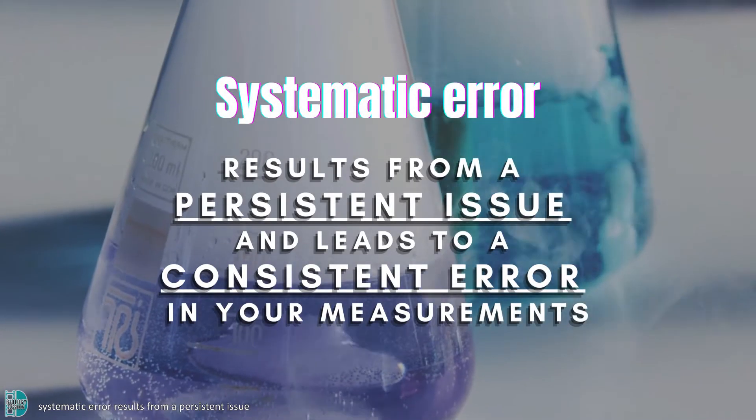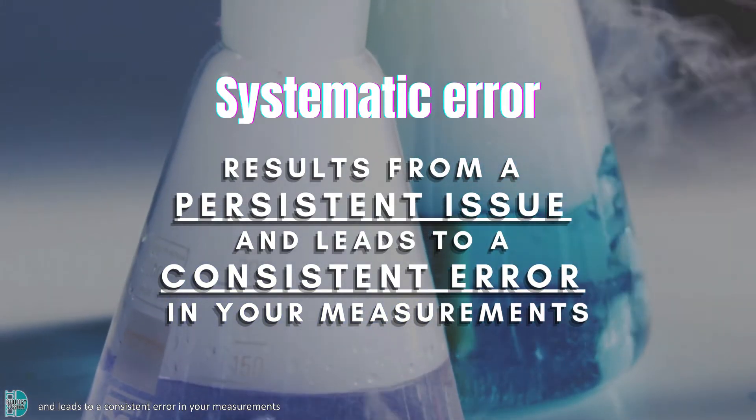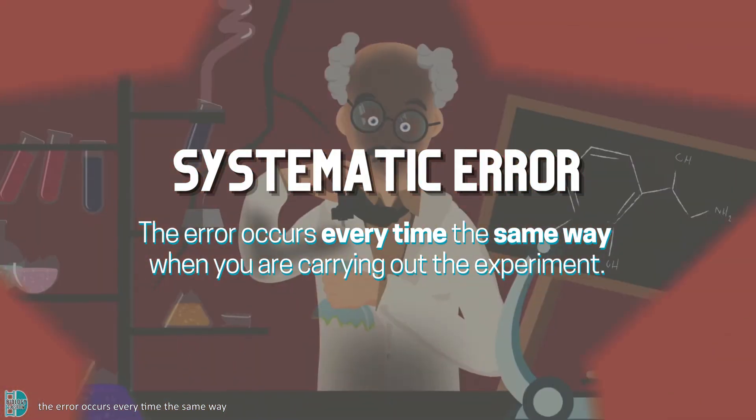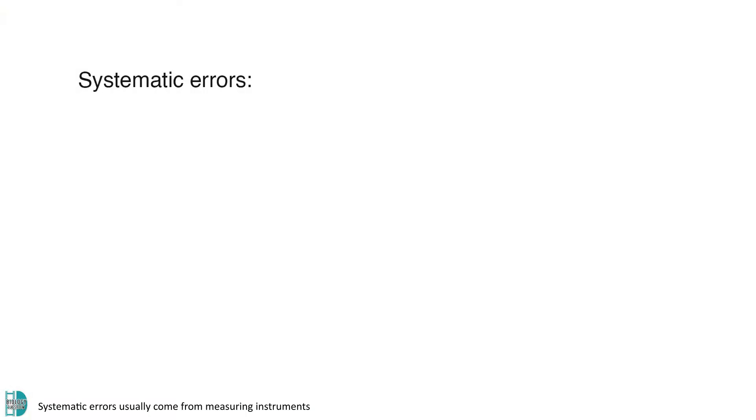Systematic error results from a persistent issue and leads to a consistent error in your measurements. This means that the error occurs every time the same way when you are carrying out the experiment. Systematic errors usually come from measuring instruments.